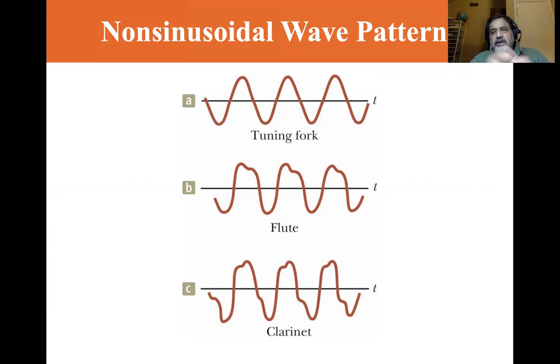If you do strike a tuning fork too hard, you will get overtones, and you'll get modes where you introduce other waveforms on the tuning fork. But if you hit it softly with a nice rubber mallet, you'll get a pure tone.